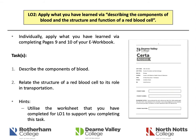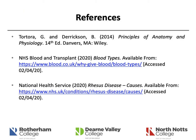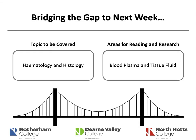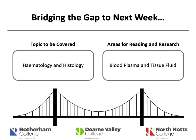The learning outcomes are: 3.1 — describe the components of blood; and supplementary to 3.1 — relate the structure of a red blood cell to its role in transportation. As this is going on YouTube, the references used for this video are shown on screen. Next week, resources are already on Google Classroom if you want to get ahead — we will be looking at blood plasma and tissue fluid, covering haematology and histology. Thank you very much for listening; if you have any questions please do let me know.